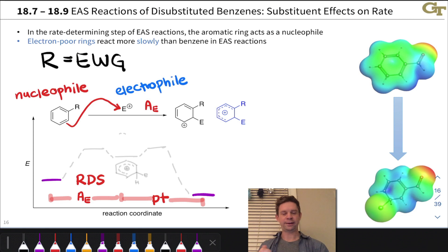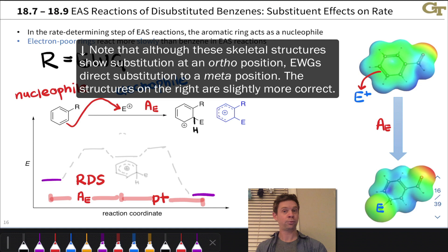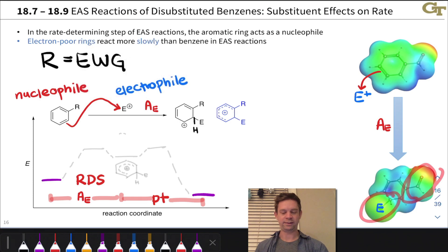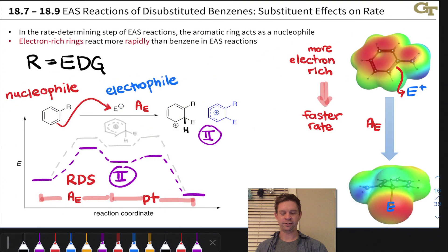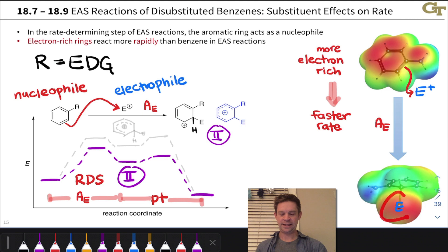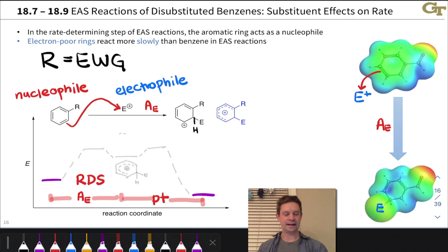On the electrostatic potential maps, we can draw curved arrows as well, and they look something like this. We can see that E has ended up in a different position. This is subtle but important to notice, particularly as we move into the regioselectivity discussion. Notice this group is meta to where the electrophile appeared, whereas in the previous example, E is ortho to where the donating group appeared. We're going to come back to that later.